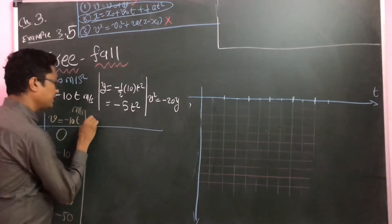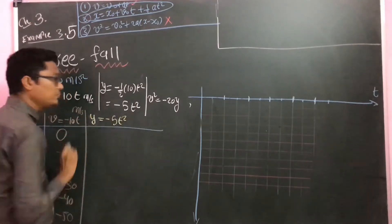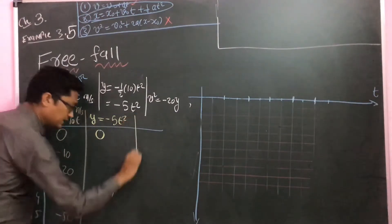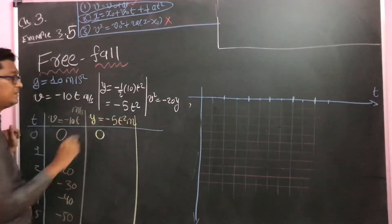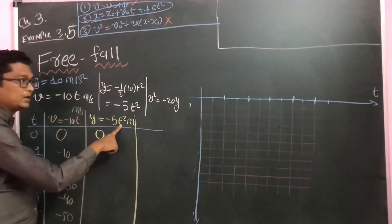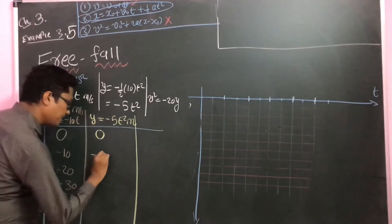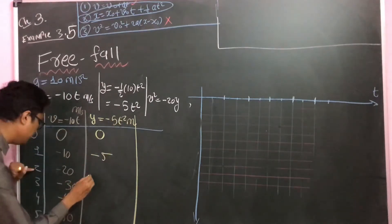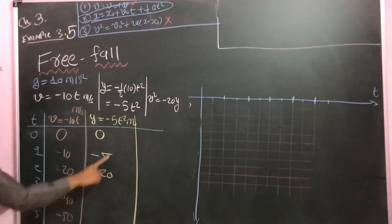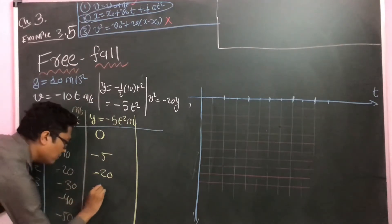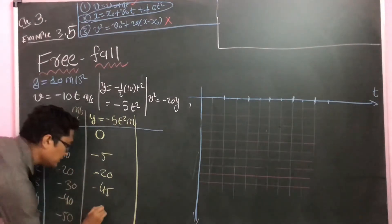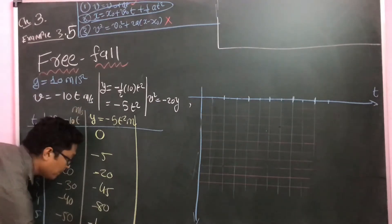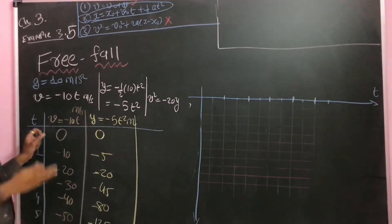For y equals minus 5t², the displacement values in meters are: at t=0, y=0; t=1, y=-5; t=2, y=-20 (since 4×5=20); t=3, y=-45 (since 9×5=45); t=4, y=-80 (since 16×5=80); and t=5, y=-125 (since 25×5=125). Now we have all values and can plot the graph.